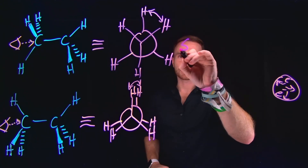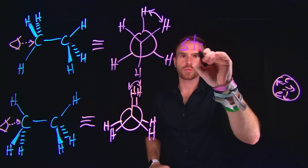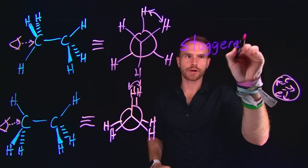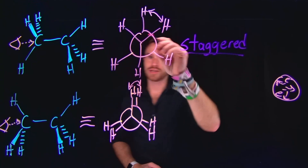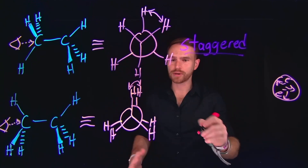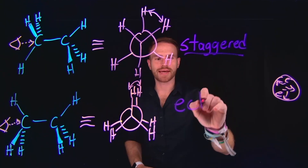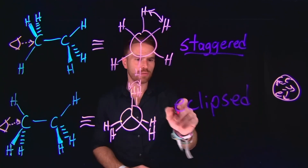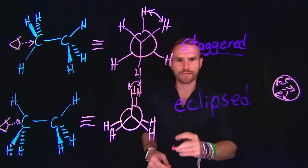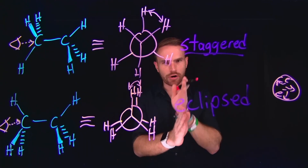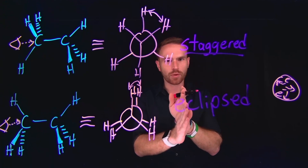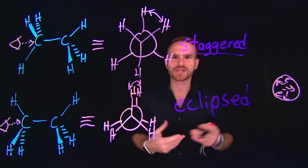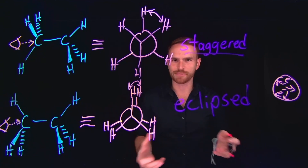The conformation where the atoms are separated further is called staggered — this is the staggered Newman projection — whereas the other is called the eclipsed Newman projection, where the atoms are in alignment with one another. We say they're eclipsed, just like in the case of a solar eclipse or a lunar eclipse.